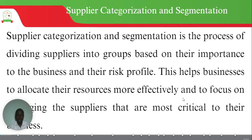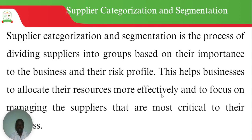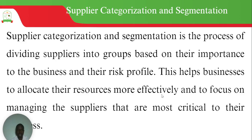Welcome to this lecture on supplier categorization and segmentation. We mentioned this in our introduction, but now we are getting into the details. Categorization and segmentation is simply a process where we divide our suppliers into groups based on their importance to the business, and we also look at their risk profile. The purpose is to allocate resources more efficiently.